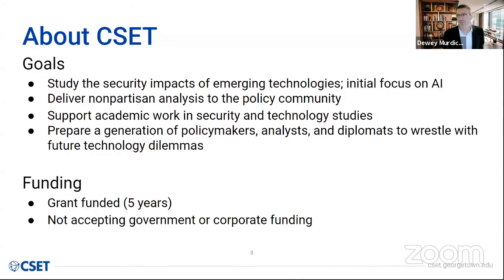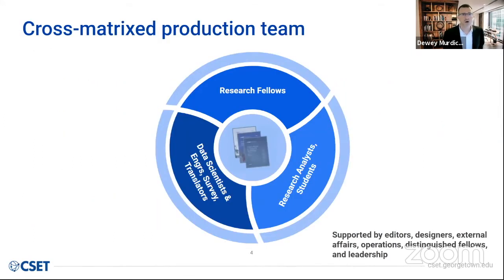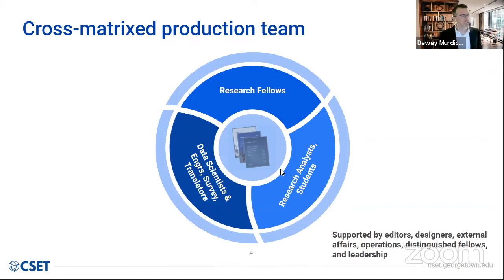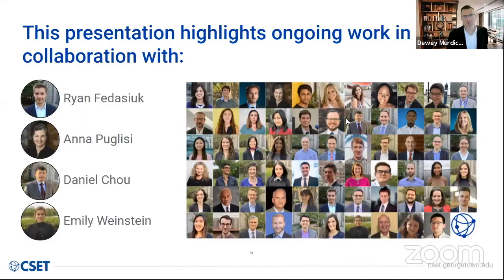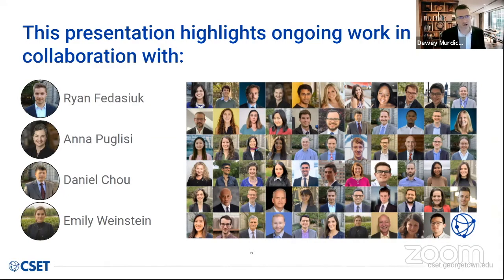We're funded for five years with a grant and not taking money from commercial or government sectors at this point. The way we produce our work is focused on cross-matrix collection teams: research fellows who lead the research questions, supported by research analysts and students, and then data scientists, software engineers, survey specialists, and translators. When we started in December 2018, there were just two of us working at CSET. We now have 56 paid staff members, plus students and volunteer individuals. We have expertise in AI policy, applied machine learning, data science, computing, intelligence analysis, policy-related issues, law, patent analysis, and a lot of other things.